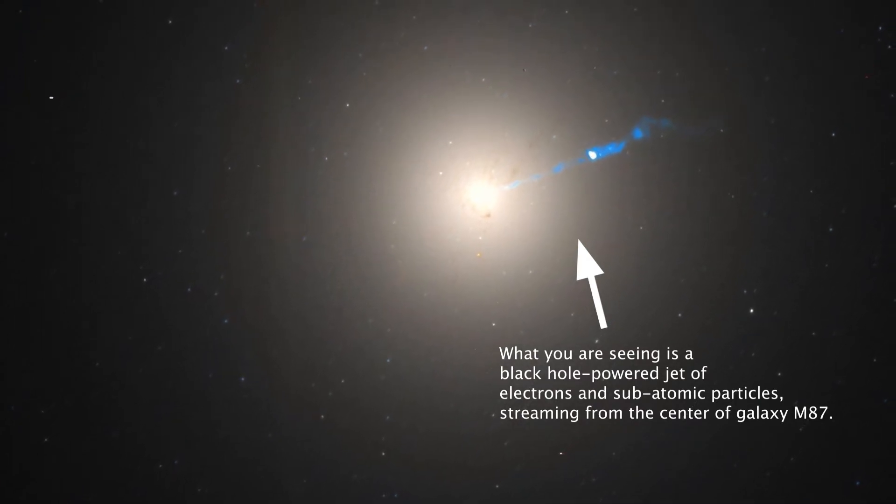Although spirals are more numerous, the four brightest galaxies are giant ellipticals, among them M87.